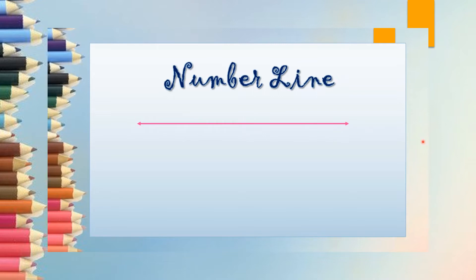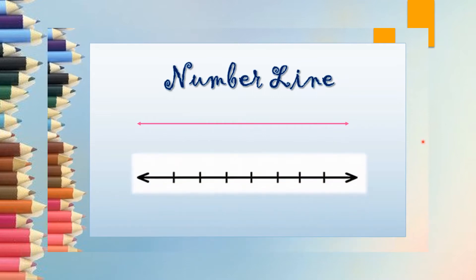After drawing a line, what you will do is put equal marks — these are called ticks. You will put ticks, but you have to take care that these ticks should be on equal intervals. When you have to draw this on your notebook, it becomes very easy to draw the number line if you use a scale.